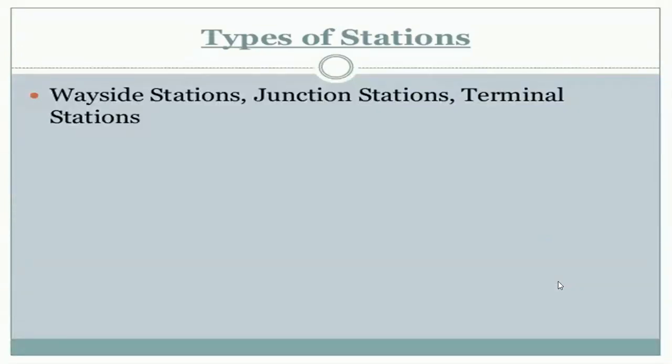What are the various types of stations? Stations are classified as wayside station, junction station, and terminal station. Many times we are confused about what do you mean by junction, what do you mean by terminal, and what do you mean by wayside station. These are the types of stations classified as per the requirements and facilities provided by the particular station.